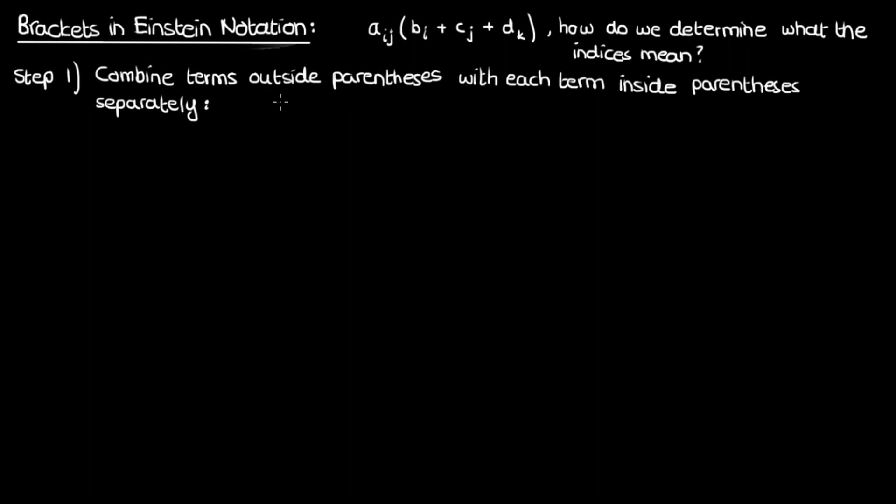You do not multiply them separately and add them because remember, we haven't proven any distributive properties in Einstein notation. All you do is combine them for the purposes of determining what the indices mean. So in this term, you would combine aij and bi first, and in this first combination, you can see that the index i occurs twice while the index j occurs once.